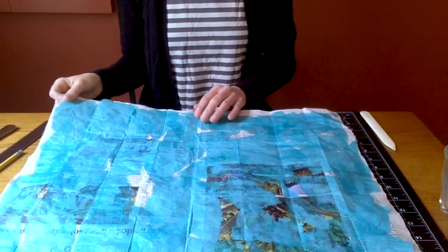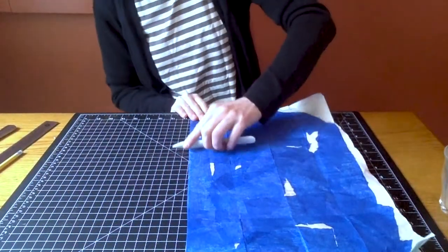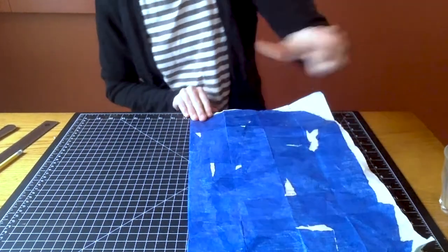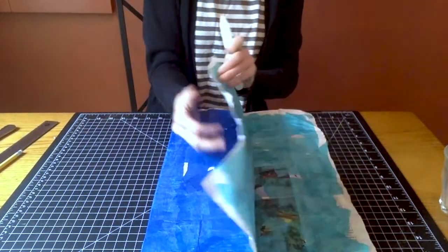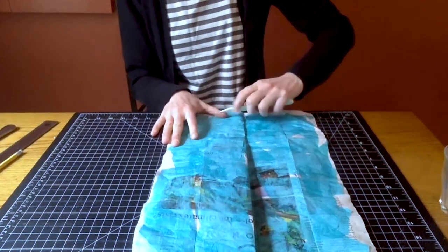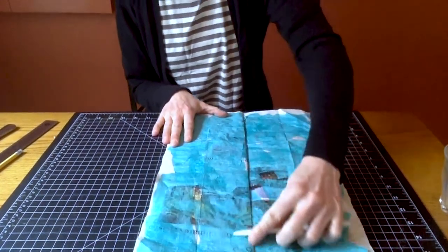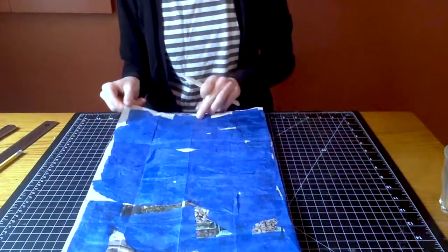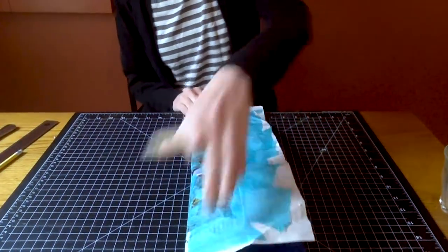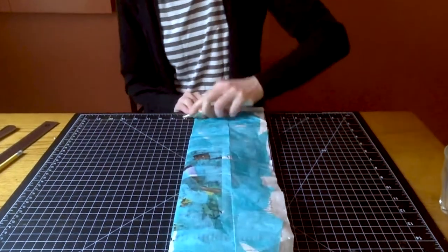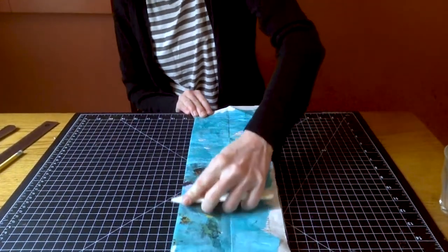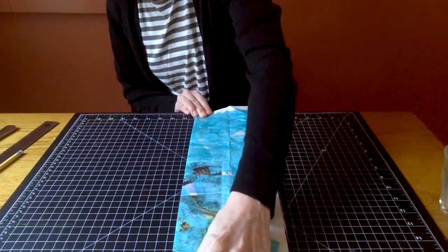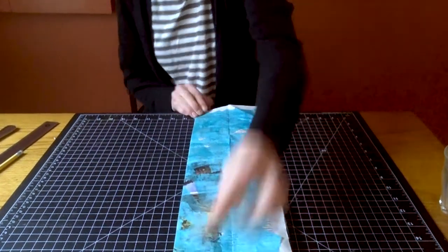Okay, we're going to start by folding our paper in half, and we'll fold our top edge back to the fold we just made, and we'll turn our paper over and fold that edge over as well. We'll be using our bone folder along all of our folds to get crisp edges.